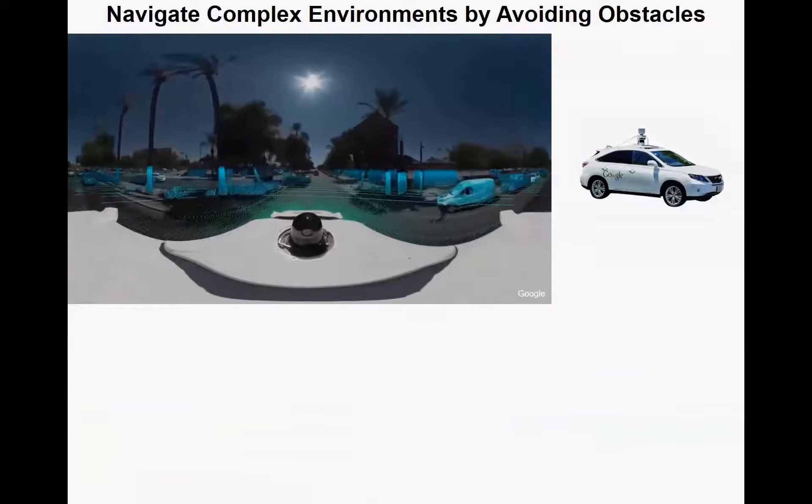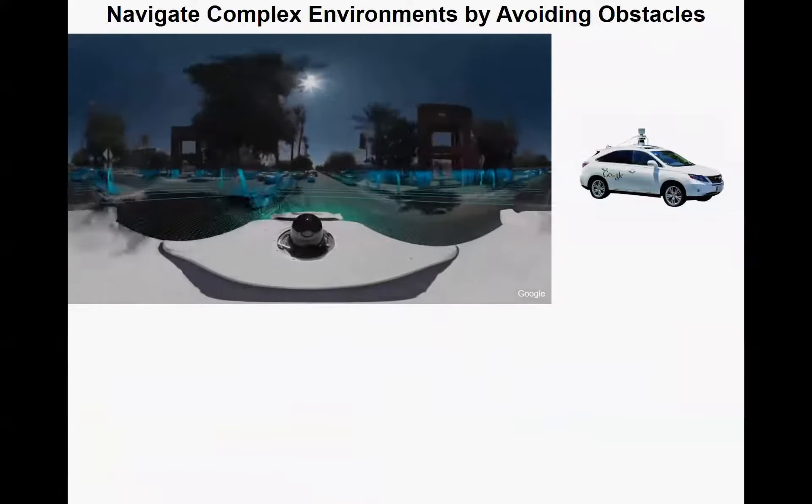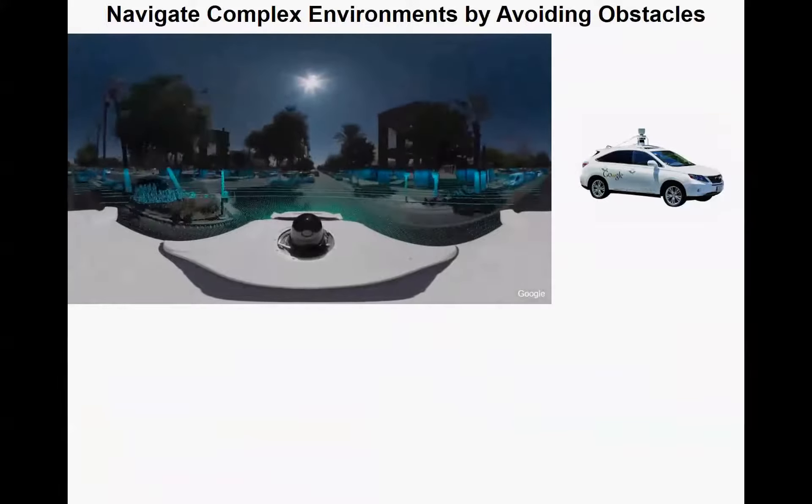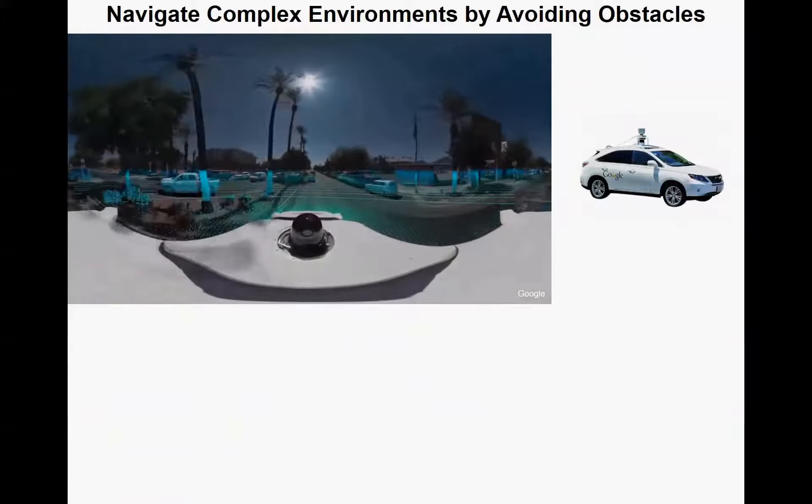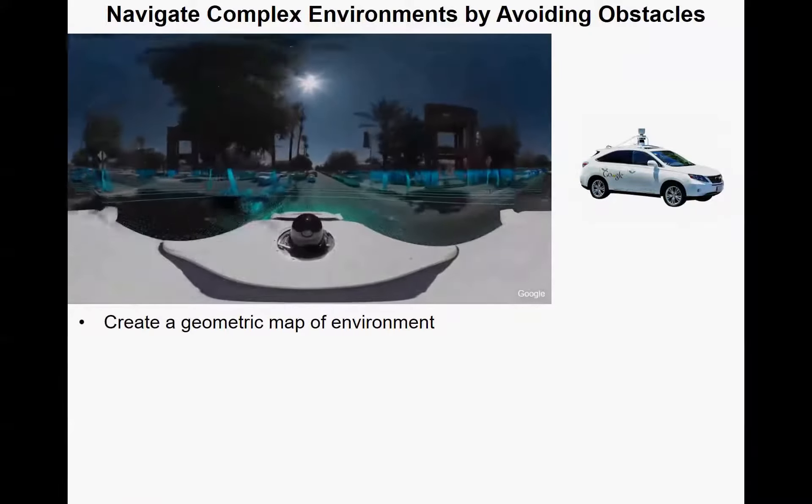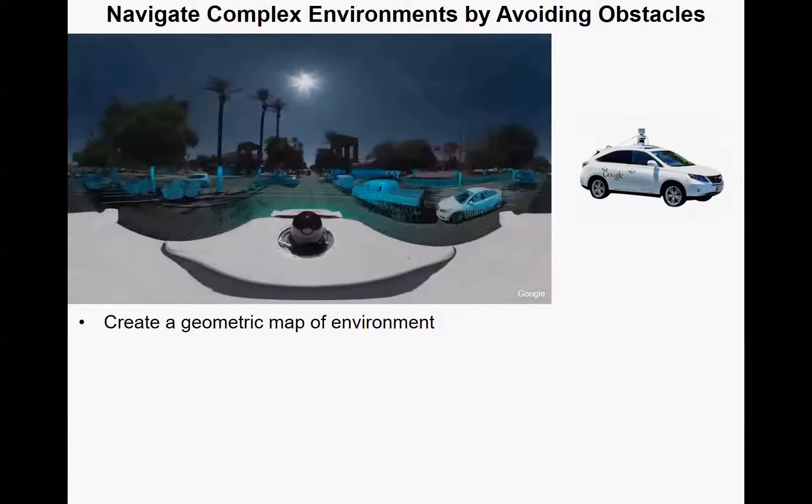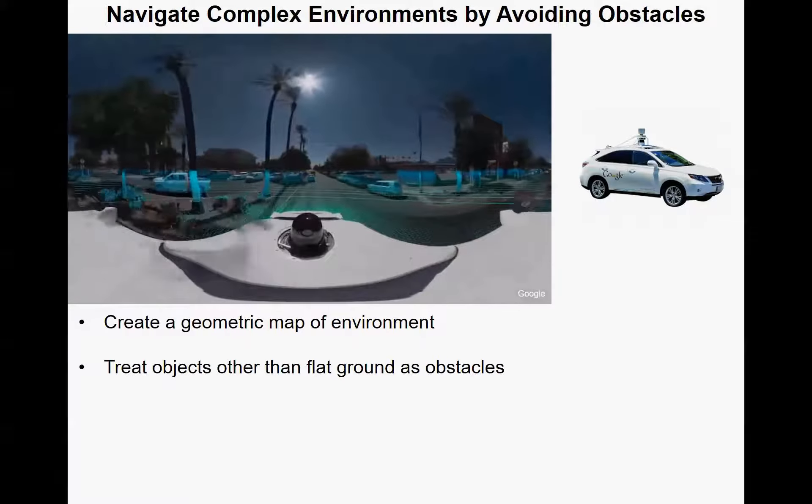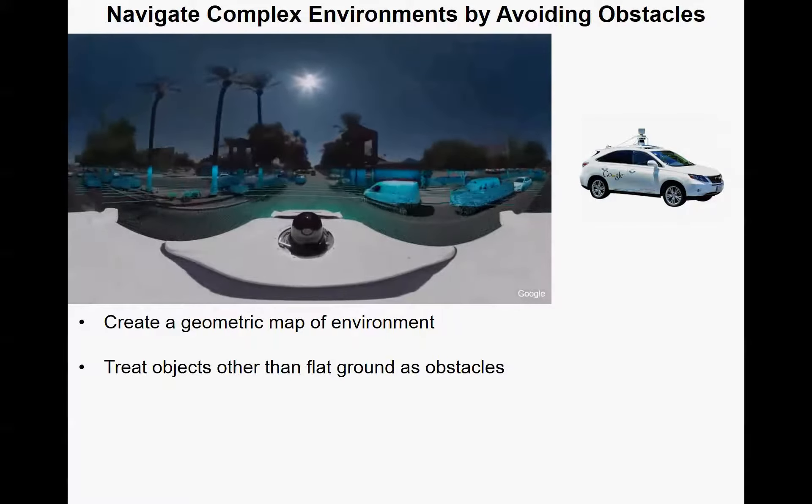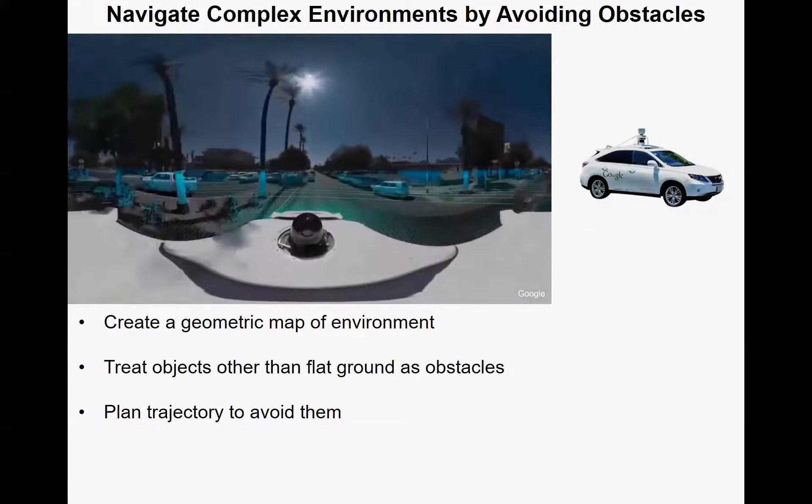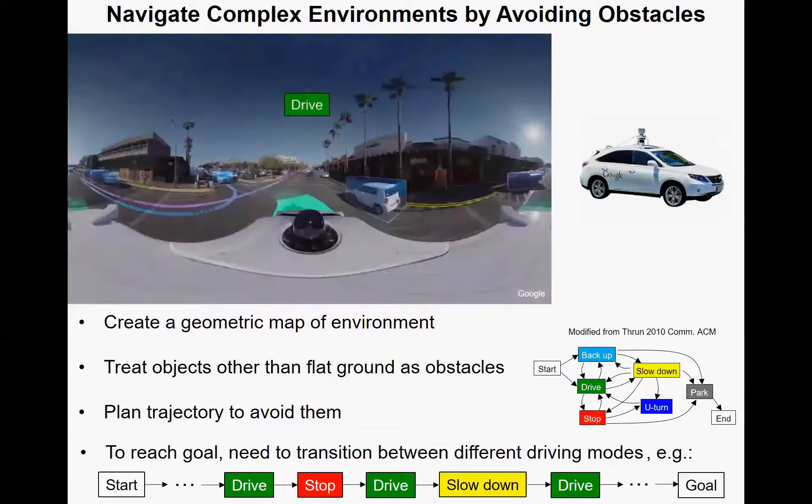When we look at how robots solve the problem of locomotion in complex environments, they usually do that by avoiding obstacles. Here's a video of a self-driving car. To move in a street, it first uses sensors, typically cameras or radar scanners, to scan the environment and generate a geometric map where any object is treated as an obstacle on flat ground. Then the controller plans a trajectory to avoid all of them. It often has to transition between driver modes to reach its goal.